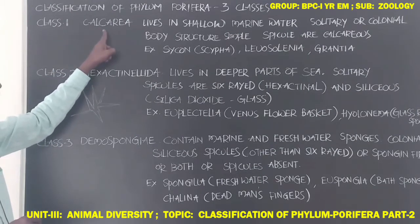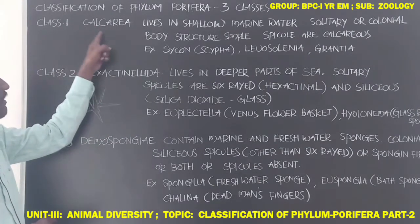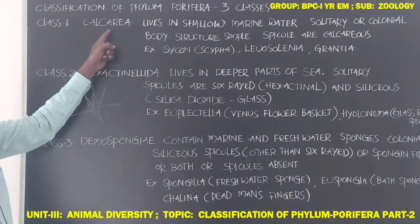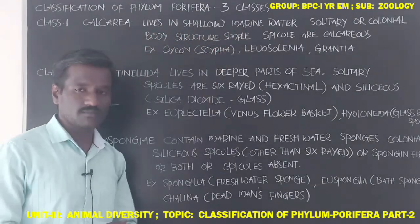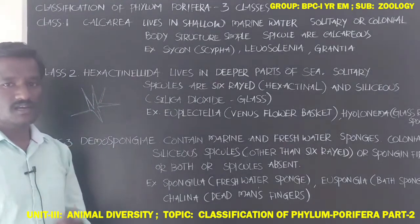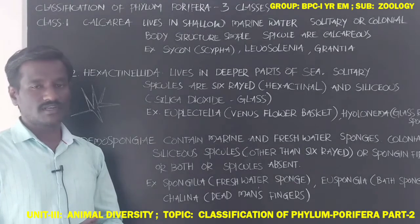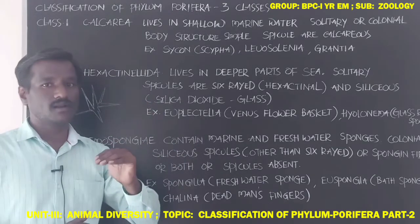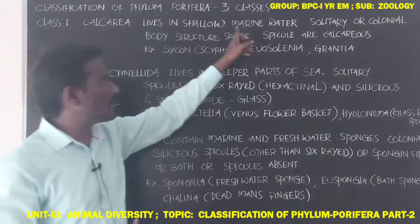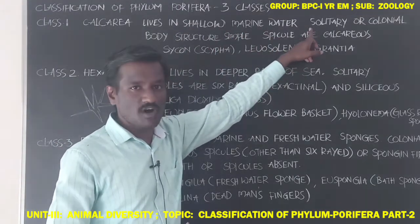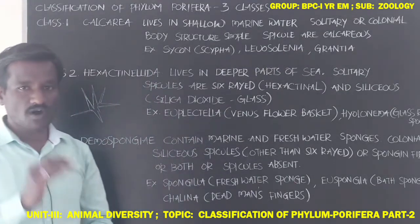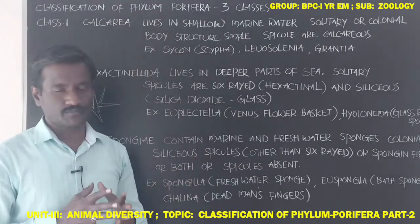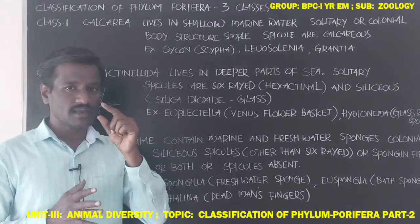Class 1 Calcarea is the first class in Phylum Porifera. These sponges live in shallow marine water — shallow meaning little depth from the surface of the sea. These sponges are solitary, meaning each sponge lives as a single individual and does not form a colony.